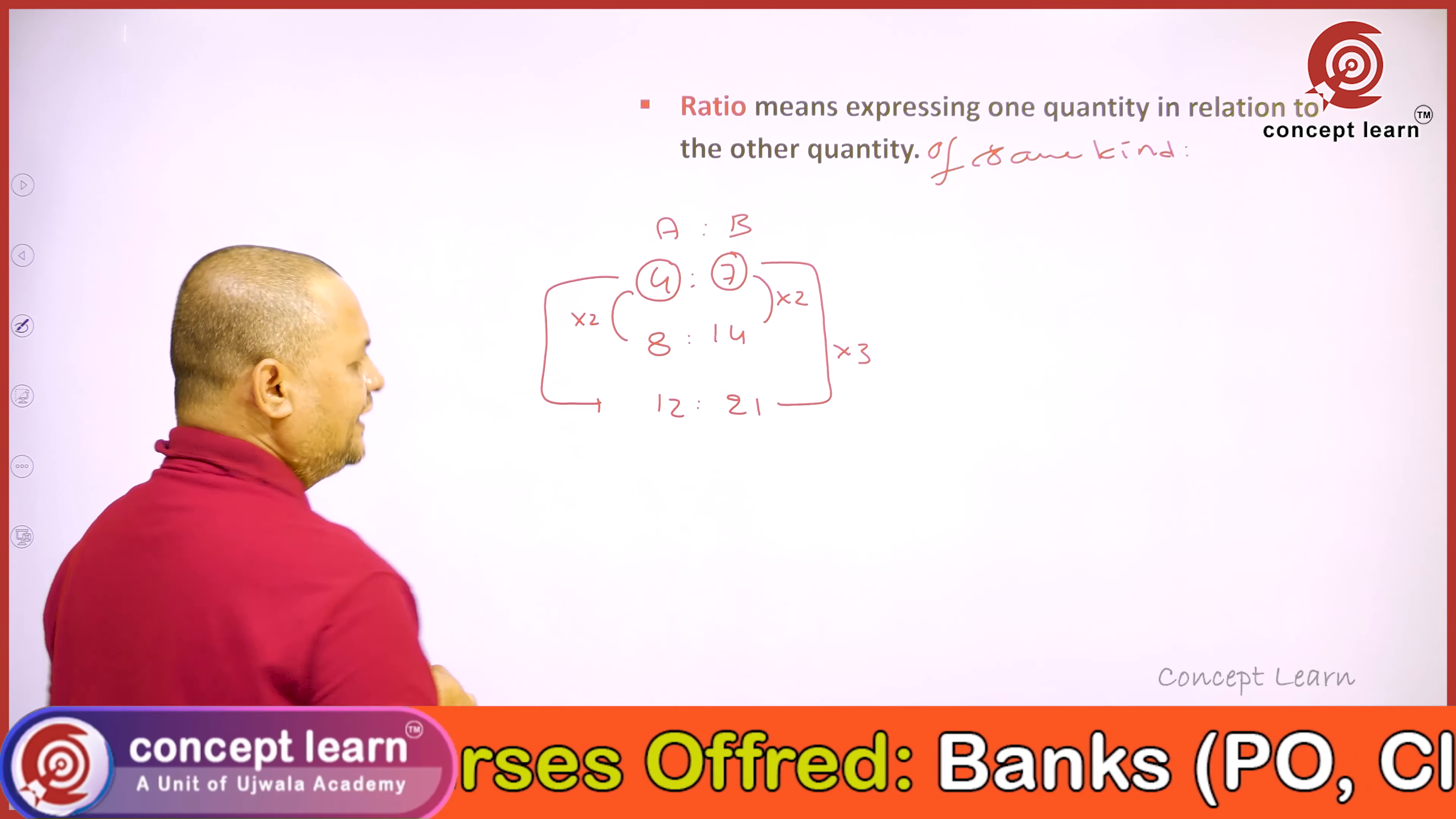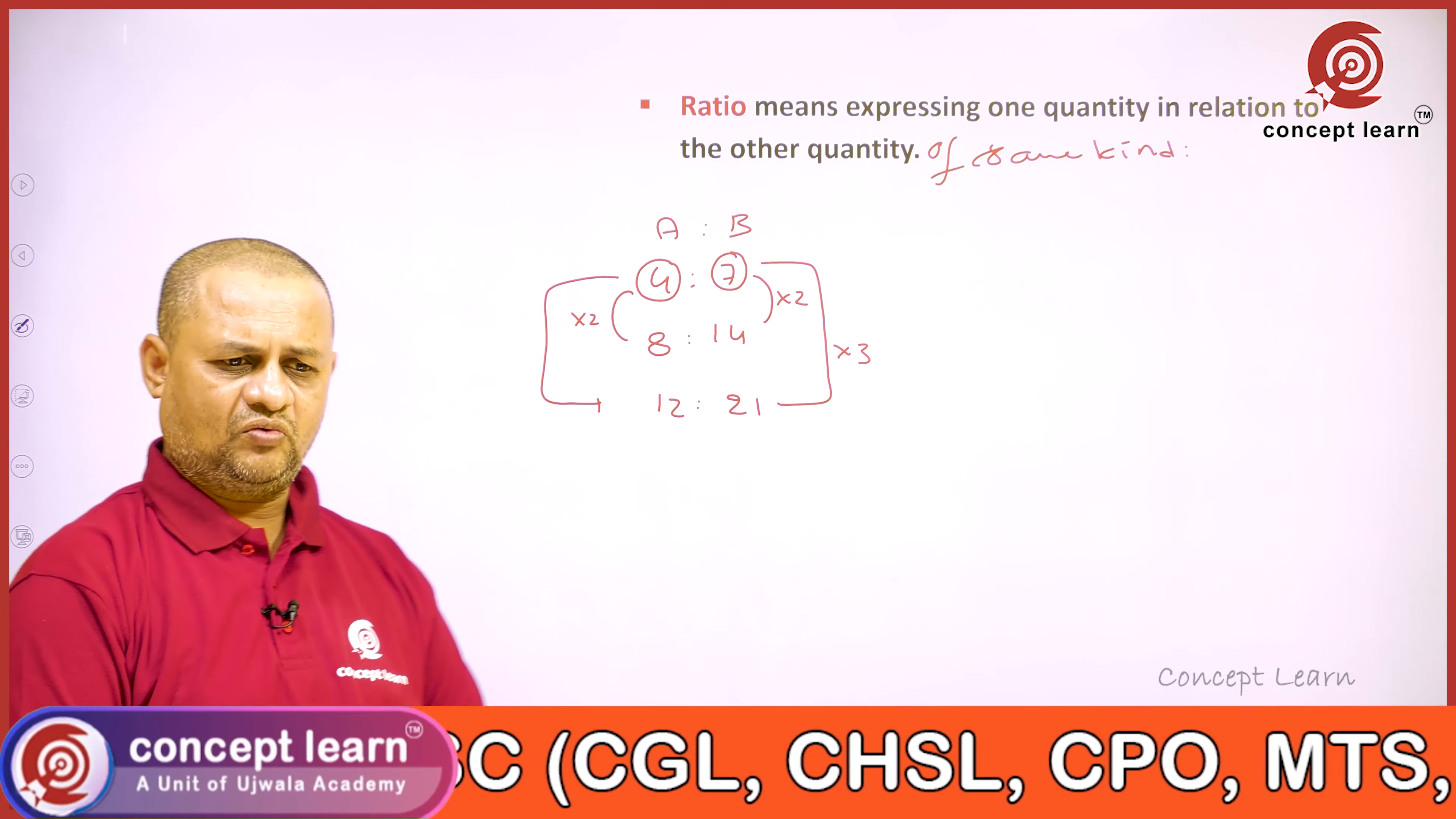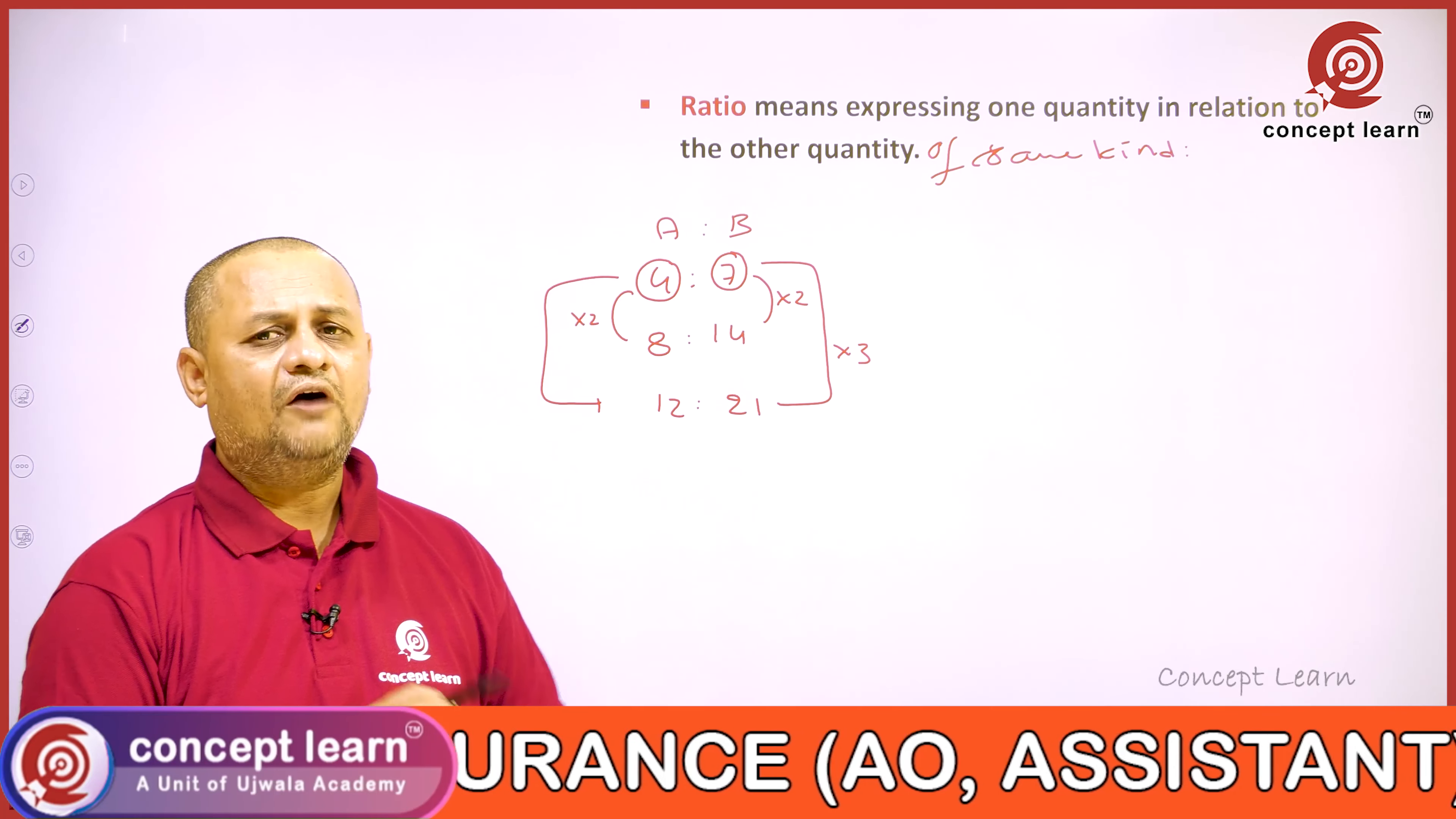So in this case, A is dependent on B, and B is dependent on A—expressing one quantity in relation to the other quantity of the same kind.